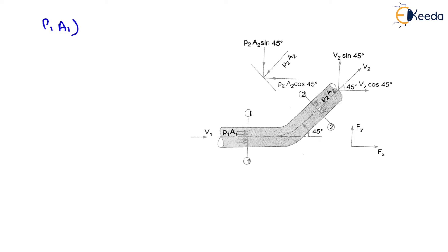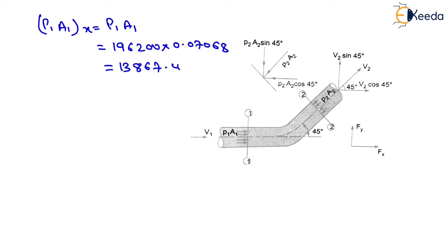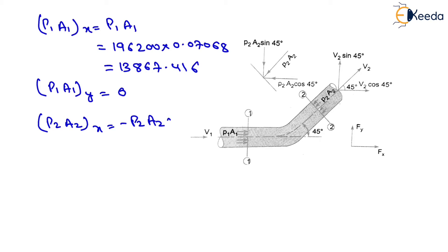The pressure-area term p1A1 in the x-direction = 196,200 × 0.07068 = 13,867.416 N, and p1A1 in the y-direction = 0. For the exit: p2A2 in the x-direction = −p2A2 cos45°, and p2A2 in the y-direction = −p2A2 sin45°.